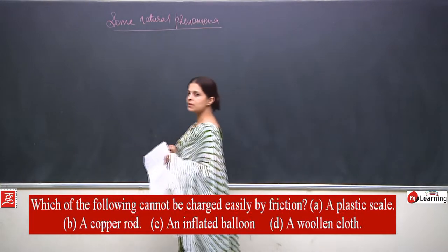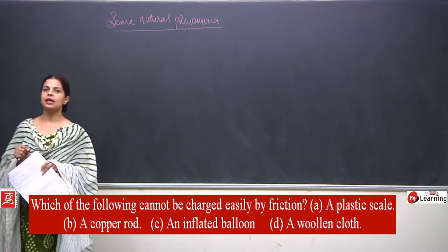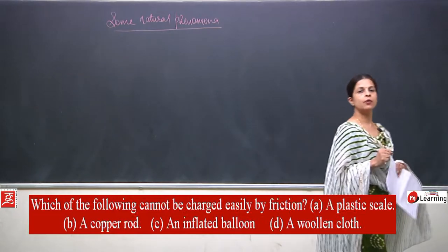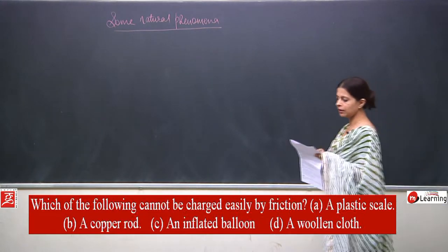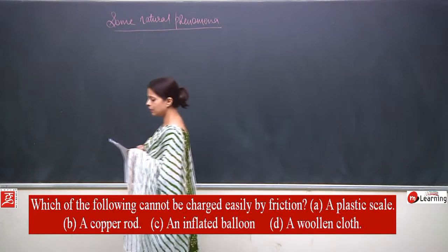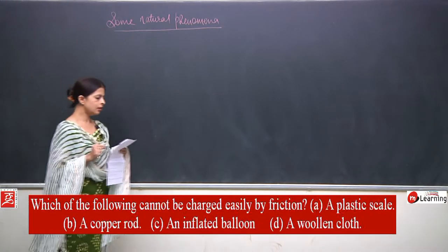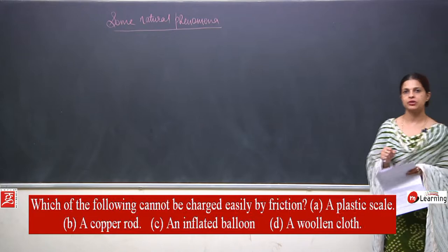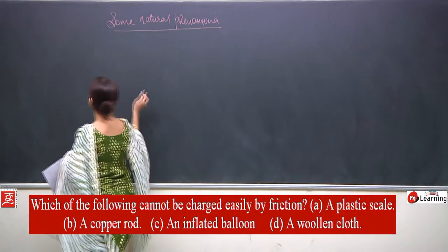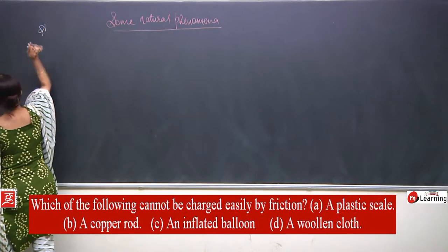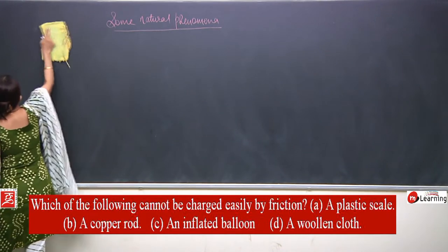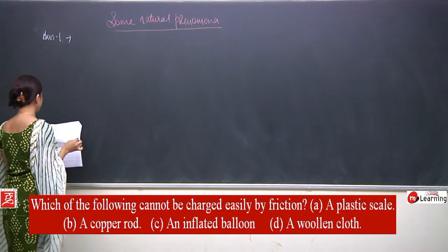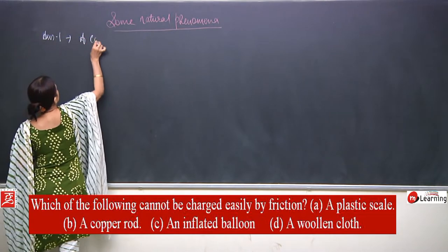Out of these four, we know that three get charged. A copper rod, however, is a conducting material — it is a very good conductor, so it won't get charged. Therefore, the correct answer to question number 1 is B: a copper rod.